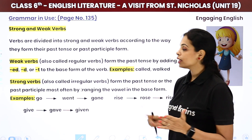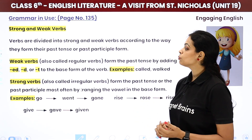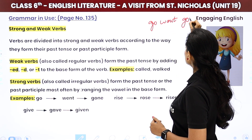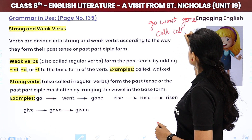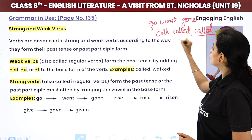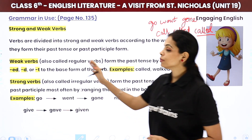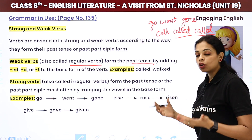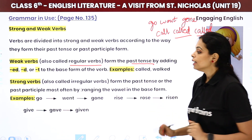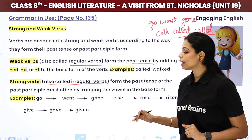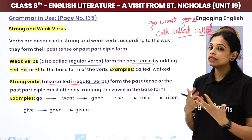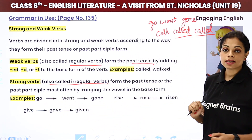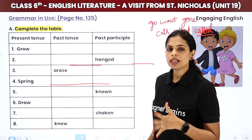Now the grammar part: strong and weak verbs. Verbs are divided into strong and weak verbs according to the way they form their past tense or past participle form. Weak verbs — also called regular verbs — form the past tense by simply adding -ed, -d, or -t, and the second and third forms are the same: call/called/called, walk/walked/walked, decorate/decorated/decorated. Strong verbs — irregular verbs — change their form in the past tense and past participle: go/went/gone, give/gave/given, rise/rose/risen. If the form changes, they are called strong verbs; if not, weak verbs.